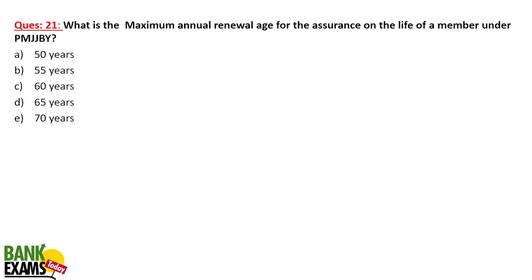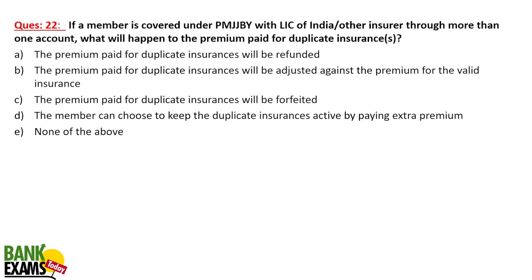The maximum annual renewal age for assurance on life under PM Jeevan Jyoti Bima Yojana is 55 years. The maximum age of entry is 50 years, but cover continues up to 55 years. If a member is covered under the scheme through more than one account with LIC or any other insurer, the premium paid for the duplicate insurance would be forfeited by the government.